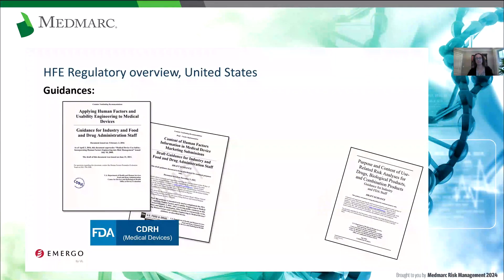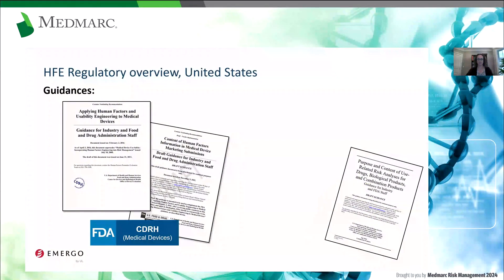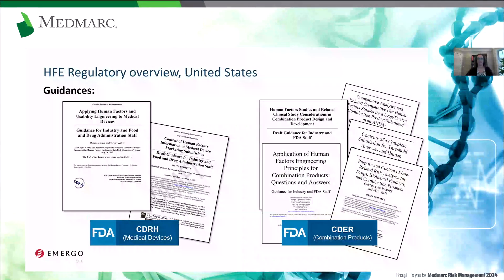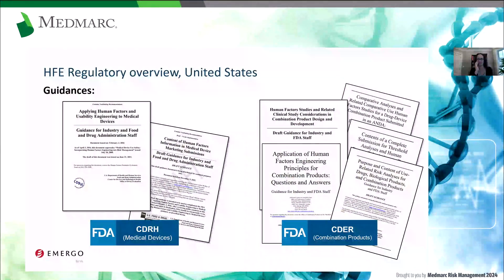The document coming behind it is a draft guidance document that was released in December 2022. This draft guidance tries to provide more clarity to manufacturers on what human factors data needs to be submitted to the FDA along with a given submission. It reflects on things like: is this a brand new product? Are you making design changes to an already marketed and approved product? What is the risk profile? The other set of documents are produced by CDER — the Center for Drug Evaluation and Research — which regulates combination products.